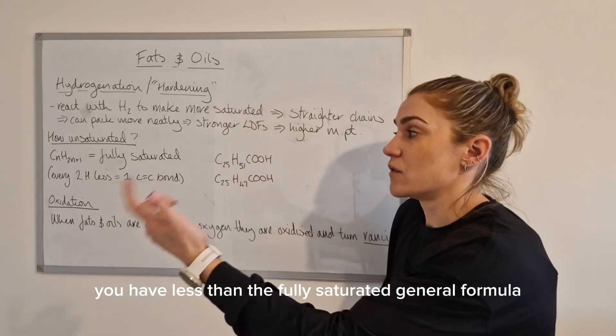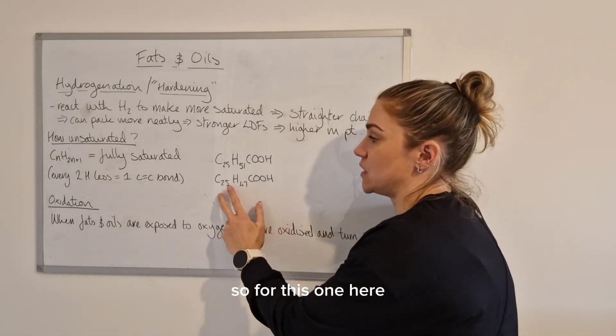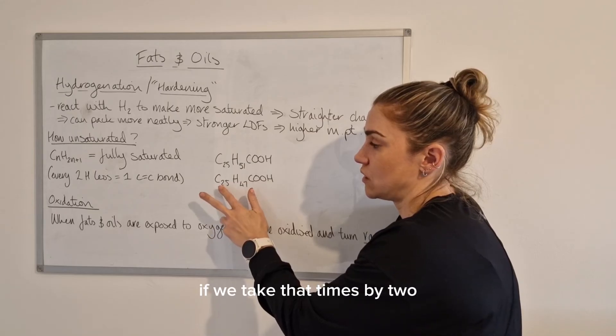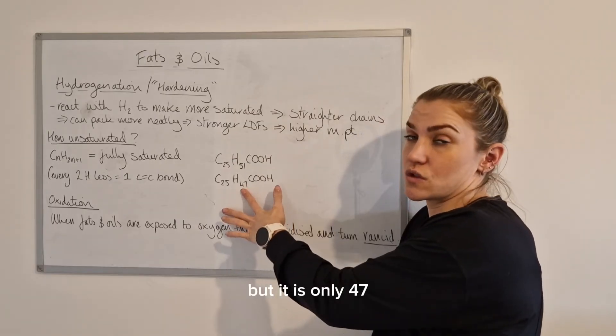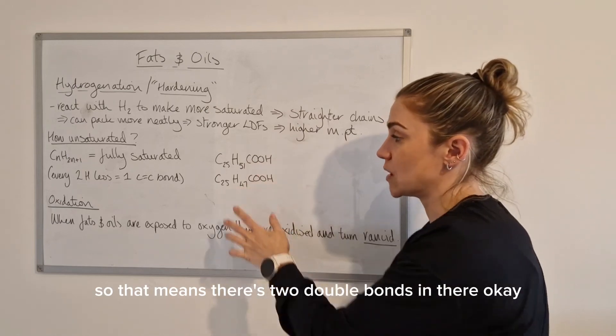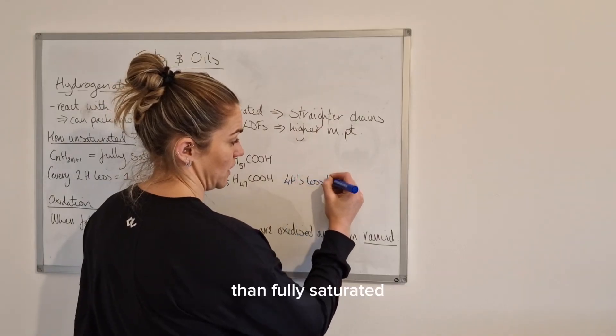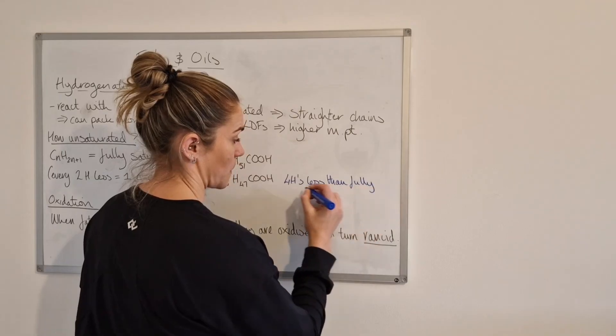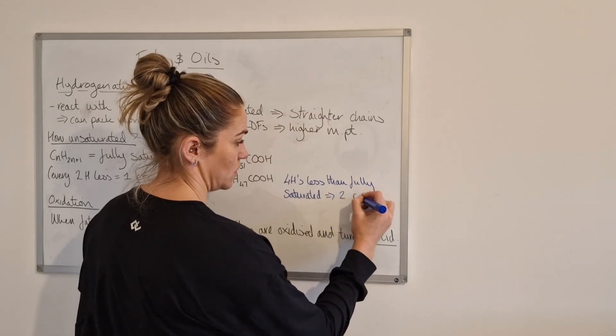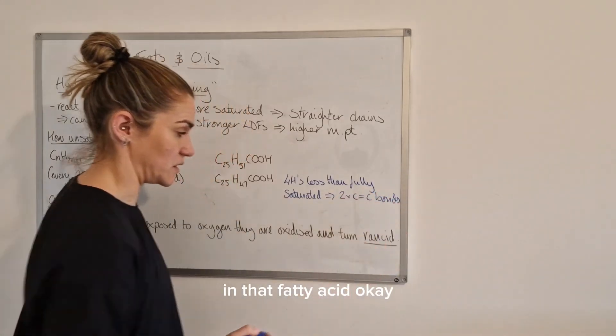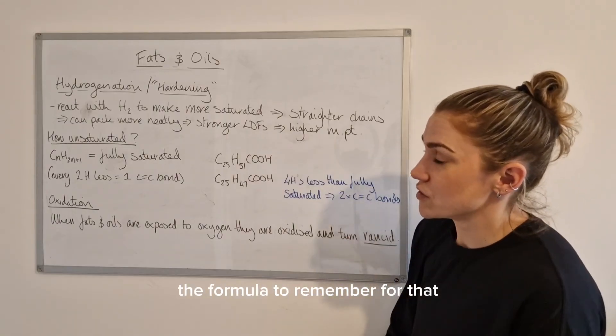For every 2 hydrogens you have less than the fully saturated general formula, that's 1 double carbon to carbon bond. For this one here, if we take that times it by 2, that's 50 plus 1 is 51. To be fully saturated it should be 51, but it is only 47. That's 4 hydrogens less, so that means there's 2 double bonds in that fatty acid.